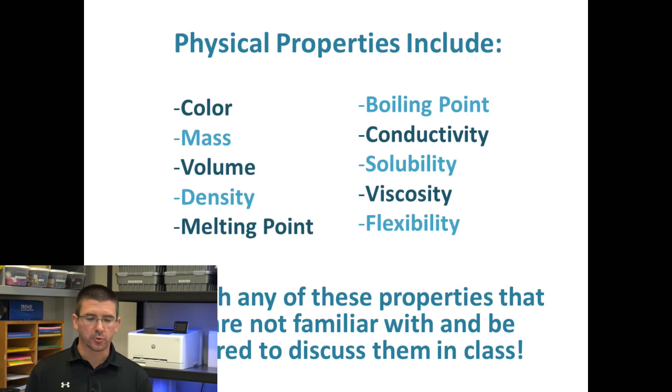Physical properties can include things like color, mass, volume, density, melting point, boiling point, conductivity—how well heat or electricity might pass through it—solubility, whether it dissolves in water, viscosity, how well it flows or how resistant it is to flowing in the case of liquids, or flexibility, how well it bends.